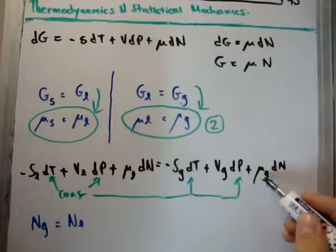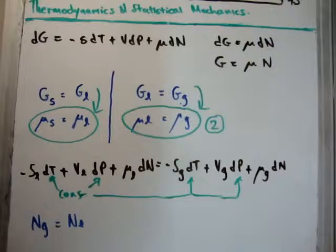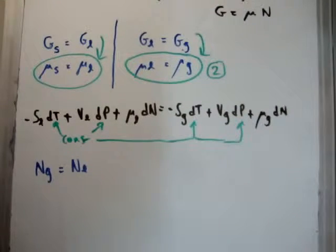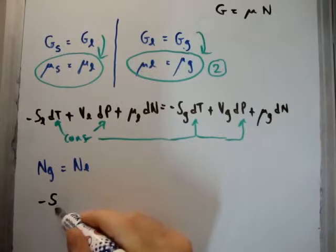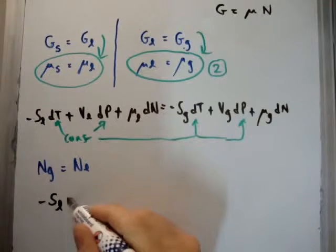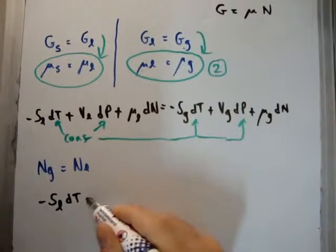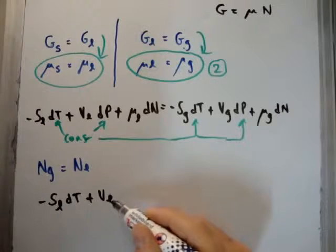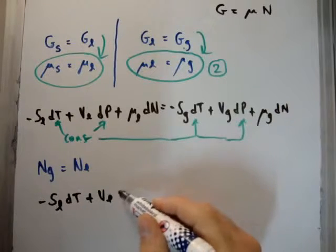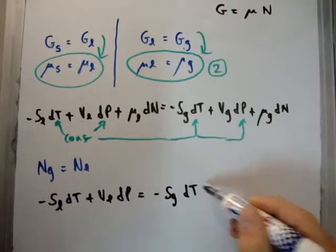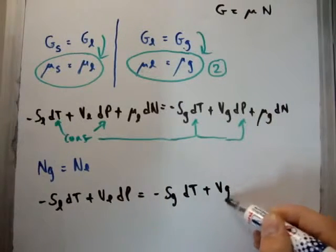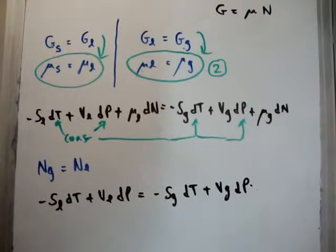We can ignore this particular term, the term inclusive of N. So we can rewrite this as -S_liquid dT + V_liquid dP = -S_gas dT + V_gas dP.